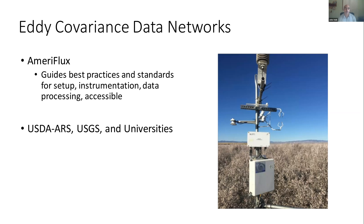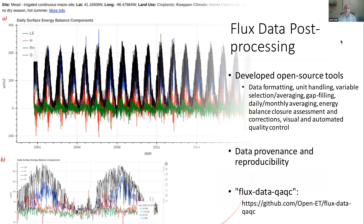We also retrieved data from the USDA's Agricultural Research Service, the U.S. Geological Survey, and universities, all of which followed best practices for setup and maintenance. To assimilate the flux data ingested to evaluate OpenET, we wanted to limit error and uncertainty from different processing approaches. So we created an open-source Python package called FluxDataQAQC. This package handles reading data in different formats, unit handling, conversions, variable averaging and selection, gap filling at different scales, energy balance closure assessment and correction, and creates visual interactive plots for visual QA/QC of the data.